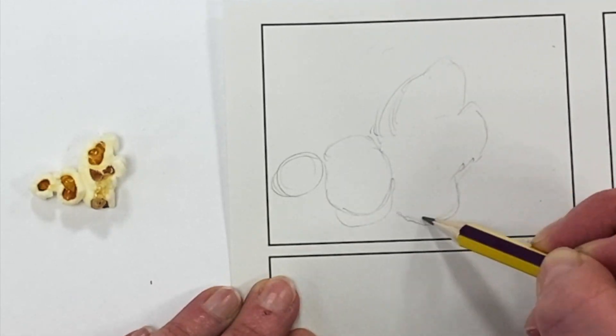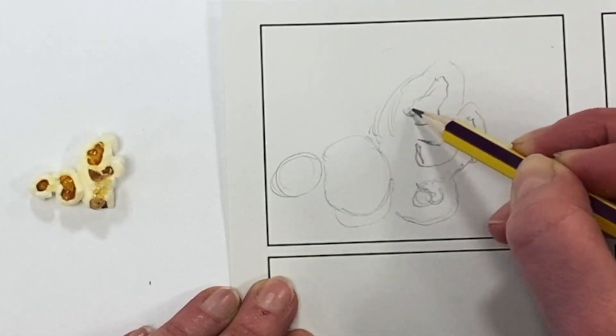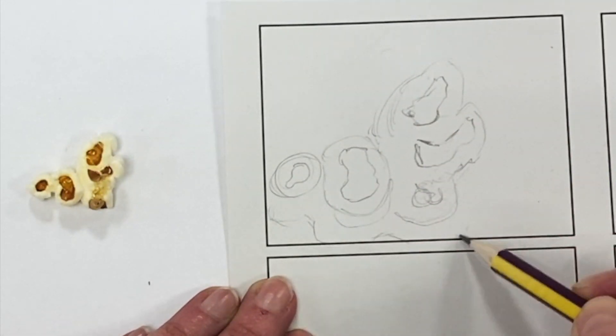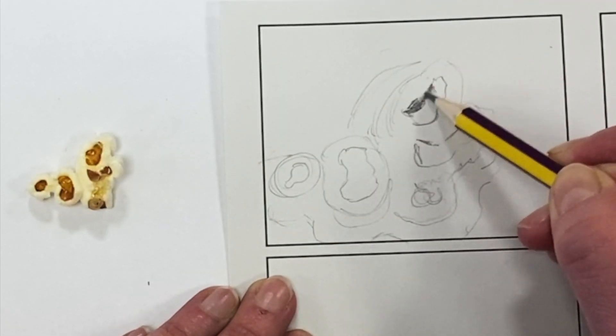Once I've got my piece of popcorn, I'm going to start by lightly drawing the shapes and the outline. I'm using light pencil pressure so I can rub it out if I need to.